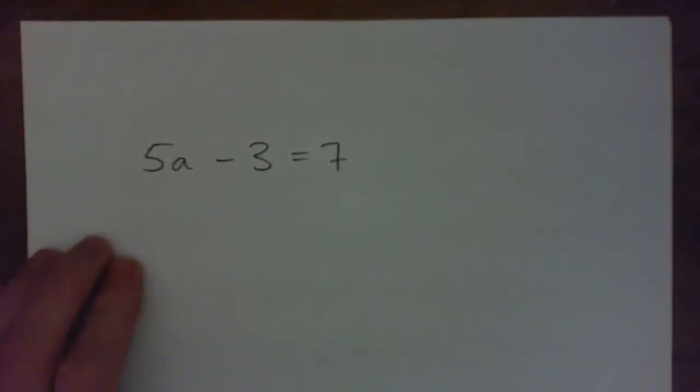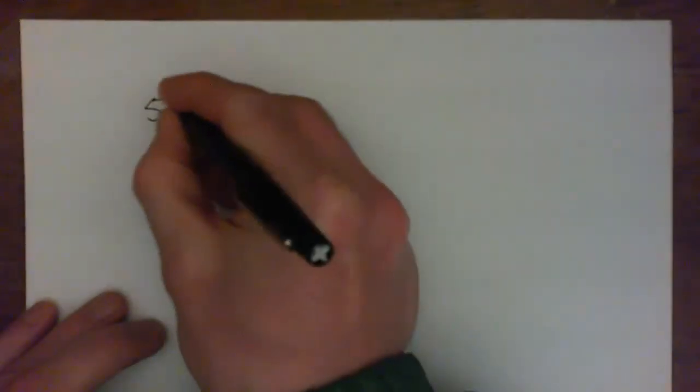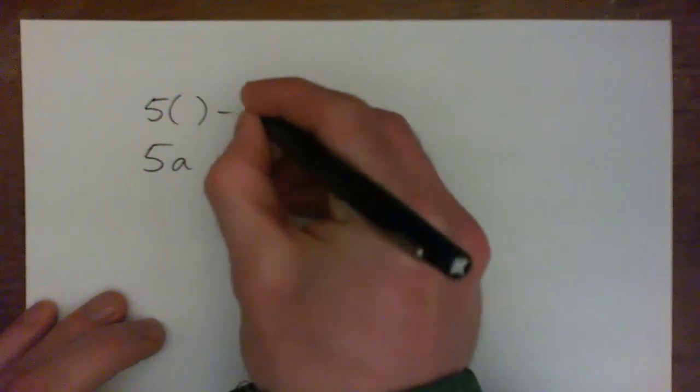We're going to solve 5a minus 3 equals 7. What that means is we want to find the missing number that you can plug in for a to make this thing true.